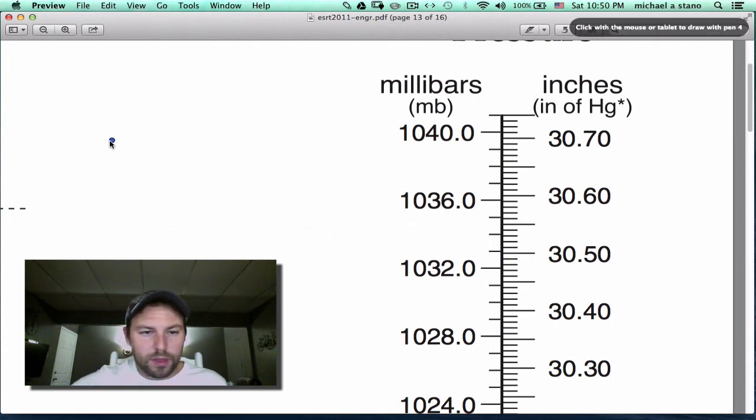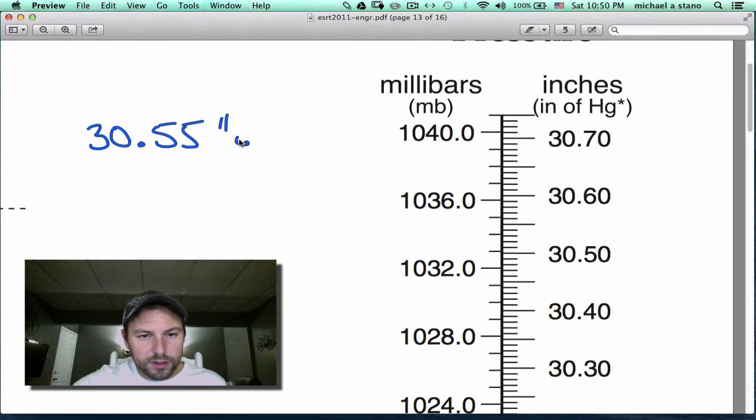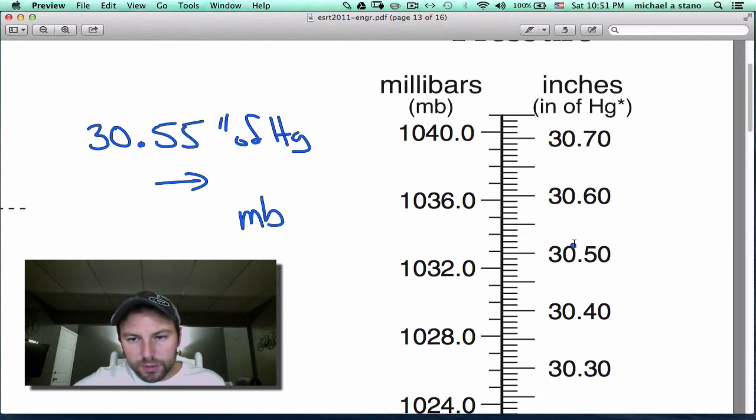Let's do 30.55 inches of mercury over into millibars. So we have 30.50. Halfway in between 30.50 and 30.6 is 30.55. Take this line, carry it over. And if we notice here, it does not fall on or close to a line.